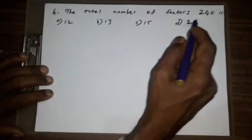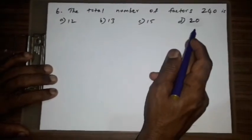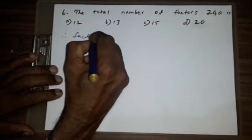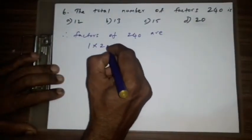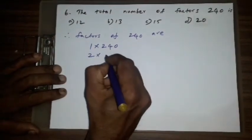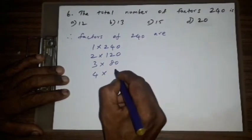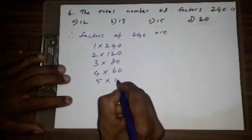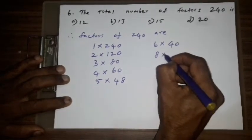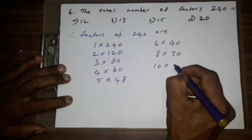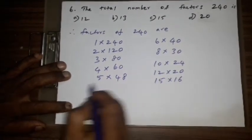Question number six: the total number of factors of 240 is A) 12, B) 13, C) 15, D) 20. Therefore, factors of 240 are 1 x 240, 2 x 120, 3 x 80, 4 x 60, 5 x 48, 6 x 40, 8 x 30, 10 x 24, 12 x 20, 15 x 16.